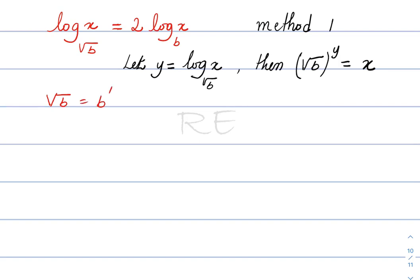Square root of b is b to the one half as a fractional exponent. We have b to the one half, to the y, is equal to x. Power over power, we multiply the exponents. So it's b to the half y is equal to x.